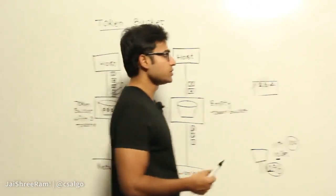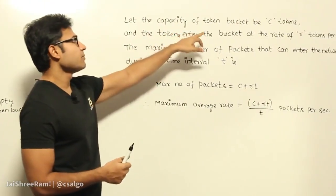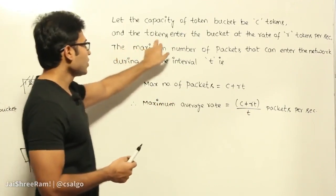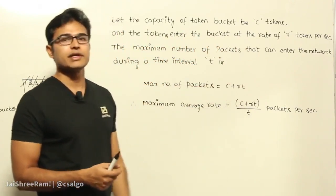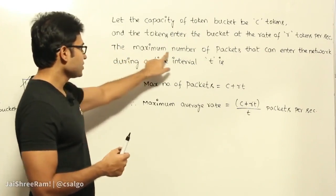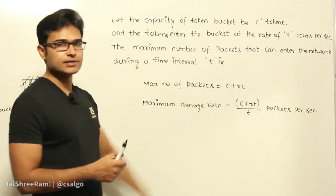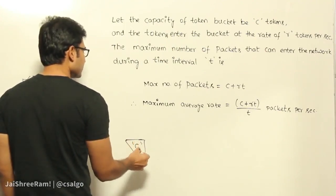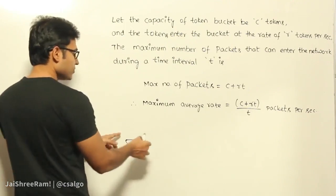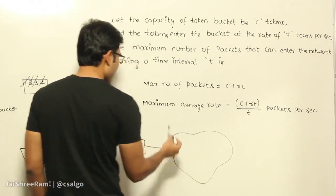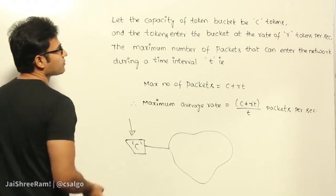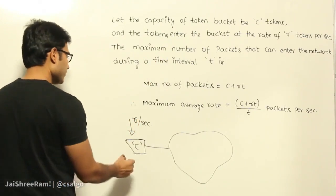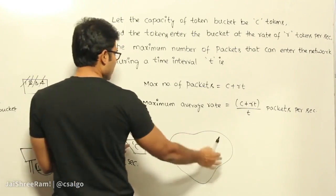Let's see the terminology before solving problems. Let the capacity of a token bucket be C tokens, meaning the bucket can hold at most C tokens. Tokens enter the bucket at a rate of R tokens per second — every second you get R tokens. We want to find the maximum number of packets that can enter the network during a time interval T. Assume the token bucket starts completely full with C tokens, and tokens can enter at the rate of R tokens per second.